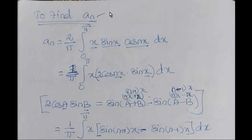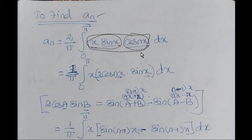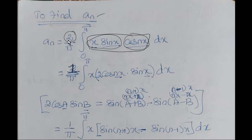Now we find aₙ. We have aₙ = (2/π)·∫₀^π f(x)·cos(nx) dx = (2/π)·∫₀^π x·sin(x)·cos(nx) dx. Since we have three functions, we use a trigonometric product formula first: 2·sin(x)·cos(nx) = sin(n+1)x − sin(n−1)x.